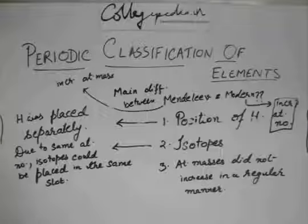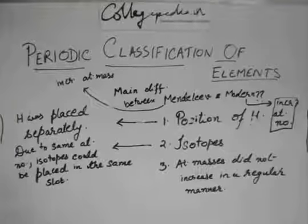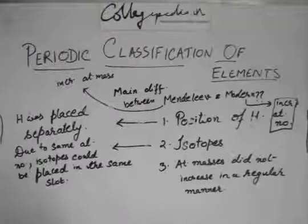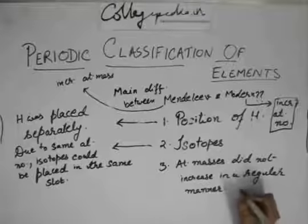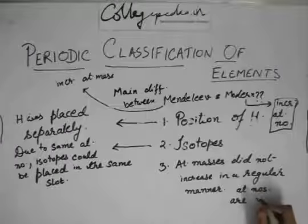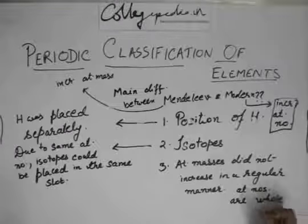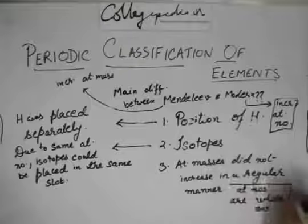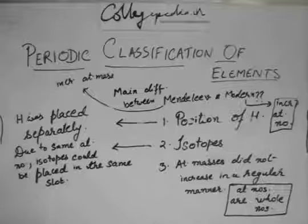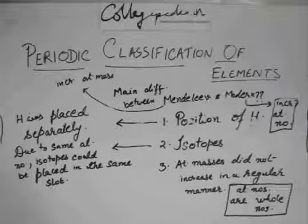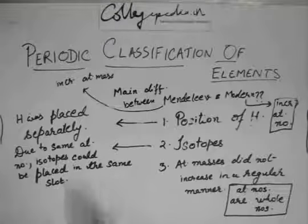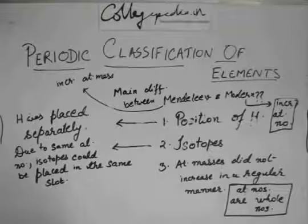And by that time, most of the elements were discovered. Almost all the elements which are discovered till now were already discovered. And atomic numbers are obviously whole numbers. So we had a whole number assigned for each and every element right from 1 to 118 which are discovered till now.